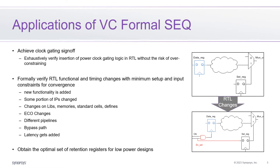Customers are using VC Formal Seq in many creative scenarios. For example, in order to achieve the ever-increasing consumer demand for more power-efficient devices, clock gating is being applied directly in the RTL. VC Formal Seq can help achieve clock gating sign-off by comparing the designs with and without clock gating insertion. This is a mature use model deployed by many leading customers.